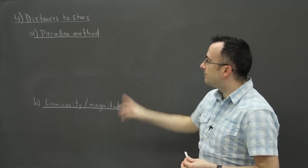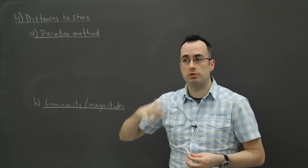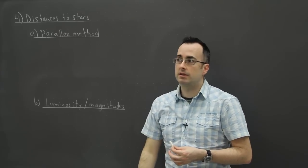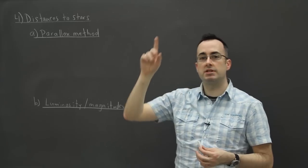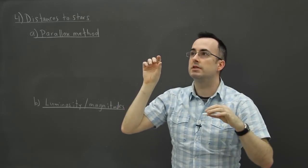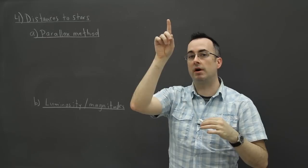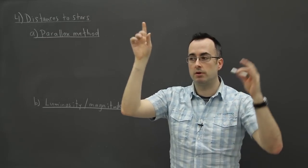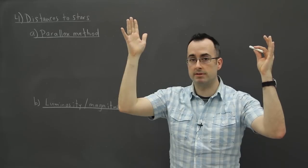The first way, for things that are really close to us, is the parallax method. This has to do with the fact that when we look up at a star, it appears in one spot. Six months later, maybe it appears to have moved a little bit compared to the other background stars.